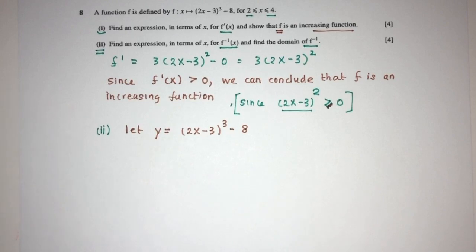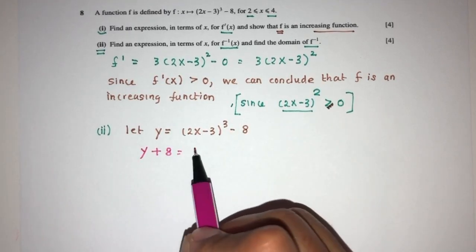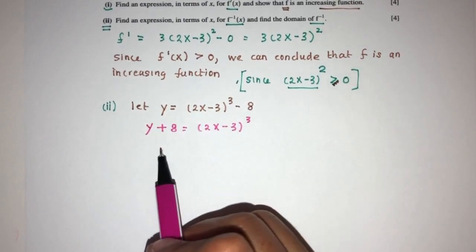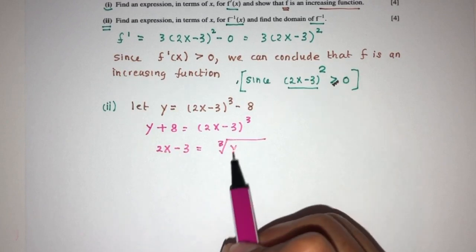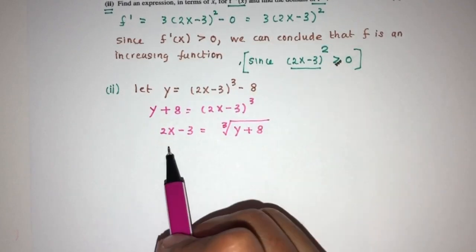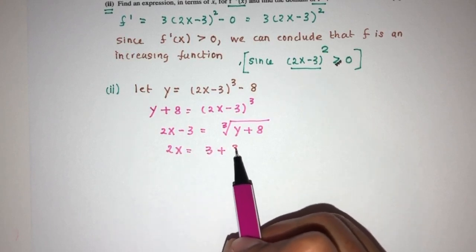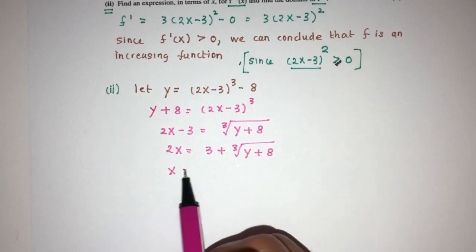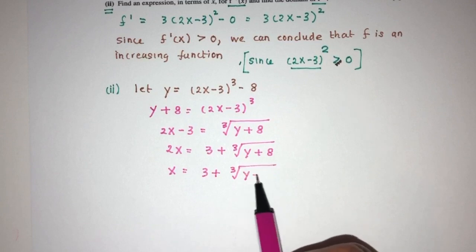Simplify. Send this over here, you will have y + 8 equal to (2x - 3)^3. Now, 2x - 3, that should be cube root of y + 8. Now, 2x have to be 3 plus cube root of y + 8. Finally, x have to be (3 + cube root of y + 8) divided by the value of 2.